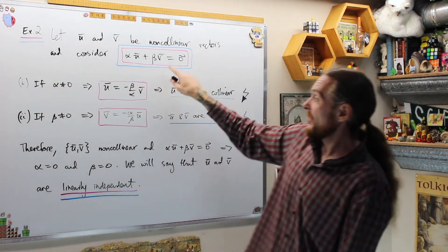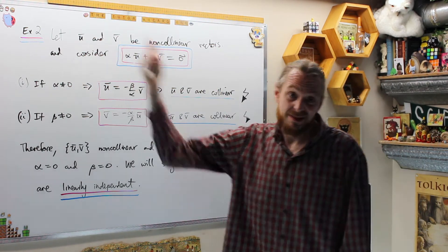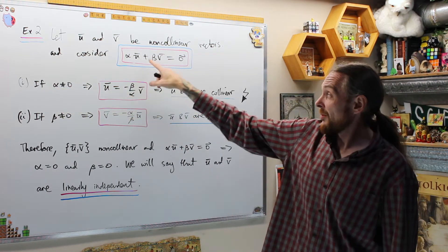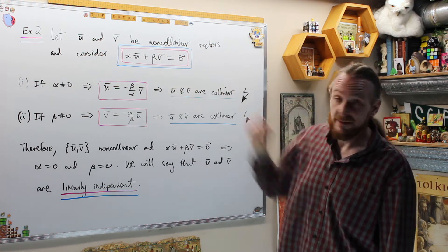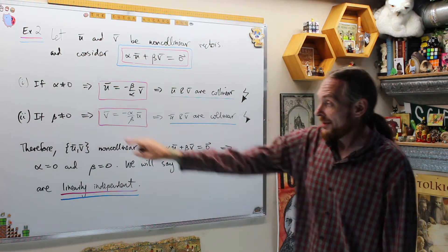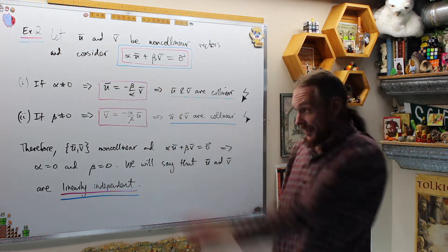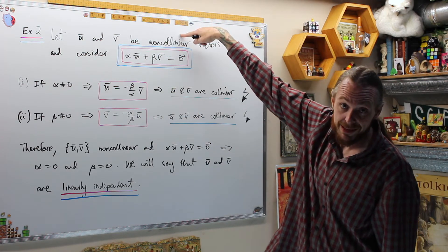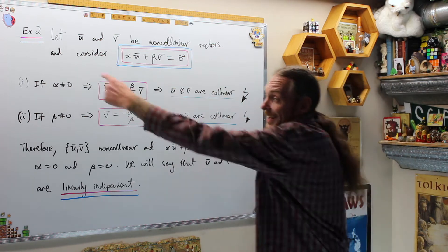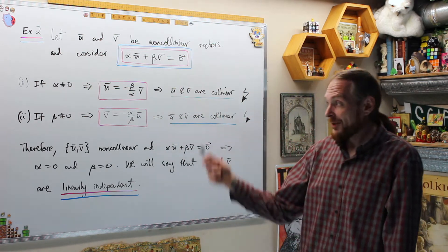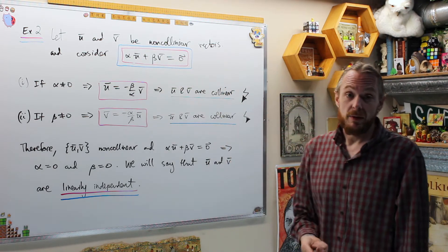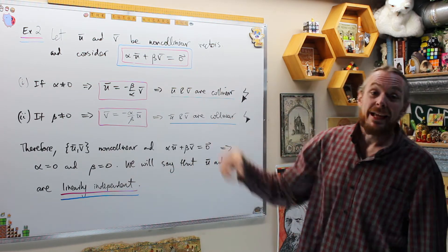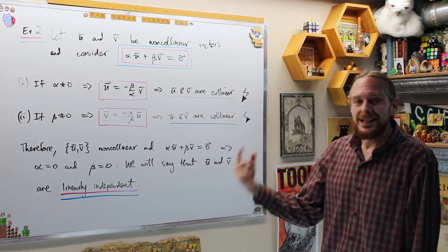Why is that? Assume zero = αu + βv and say α is not zero. If α is not zero, we can find its multiplicative inverse and divide through. Similarly, if β is not zero, we can solve for v, and that says v is a multiple of u — meaning u and v are collinear, which is a contradiction. So by reductio ad absurdum, both coefficients have to be zero. Therefore non-collinear u and v are linearly independent vectors.